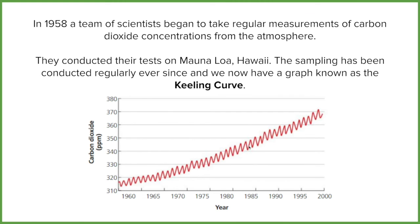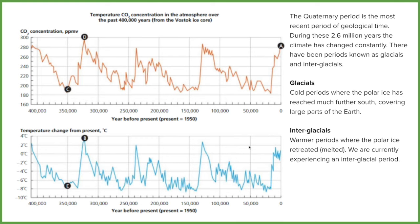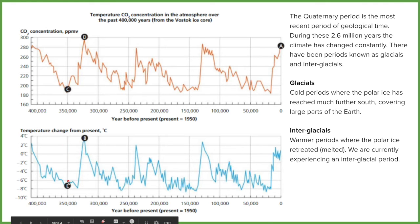Why are we talking about carbon when usually we talk about a change in temperature? Have a look at these two graphs. The top one, in the orange line, is CO2 — just like the Keeling Curve but over a much greater time period of 400,000 years. Underneath, the blue line is temperature over that same time period. They match up quite nicely: at point D we have a peak in CO2, which corresponds with a peak in temperature at point B; at point C we have a trough in CO2 and also a trough in temperature. So carbon and temperature appear to be directly linked — an increase in carbon leads to an increase in temperature.